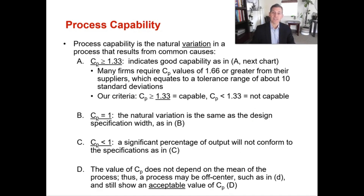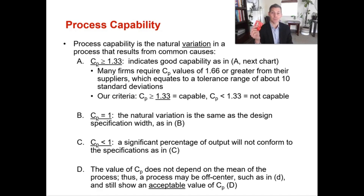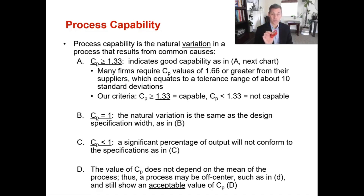When you have a process capability of less than 1, a significant portion of the output will not conform to the engineering design specifications. For example, you want between 9 and 11 pieces of candy, but if CP is less than 1, sometimes you're getting 8 and sometimes you're getting 12. You really want 10 and you're allowing 9 and 11, but a CP less than 1 means you're sometimes getting something outside that range of 9 to 11.